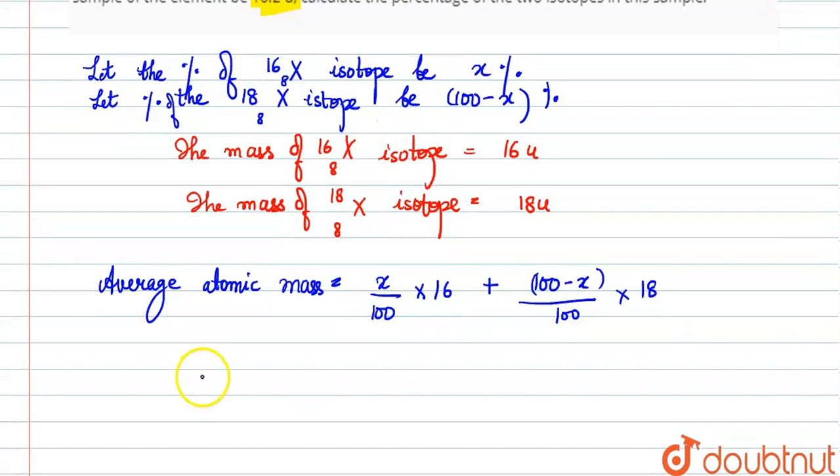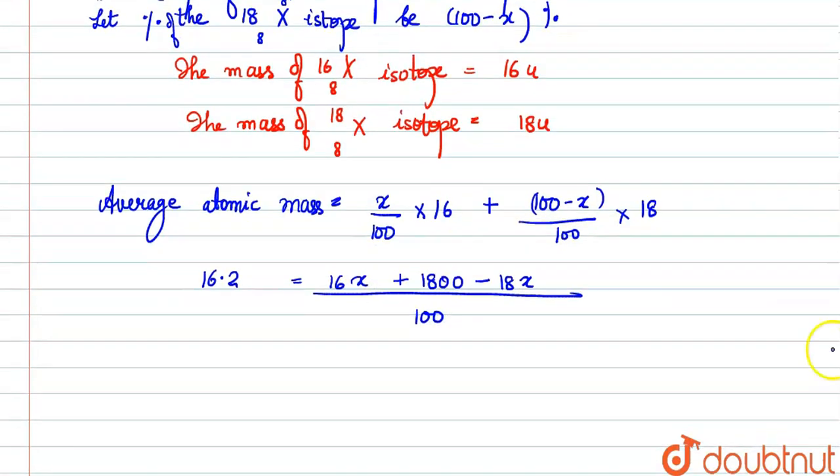Okay? And what average atomic mass are we given? 16.2u, we've written that too. So this becomes: 16x plus, let's take it, 1800 minus 18x. Okay? And now upon 100. Now this 100 goes to the other side, so what does it become?